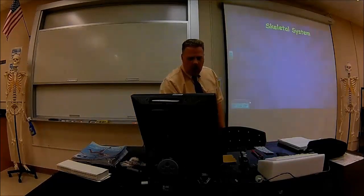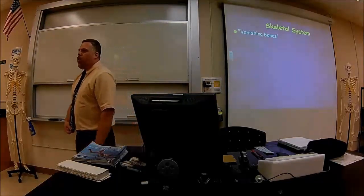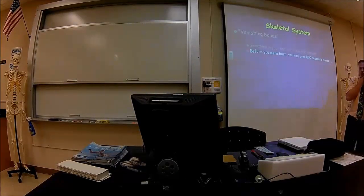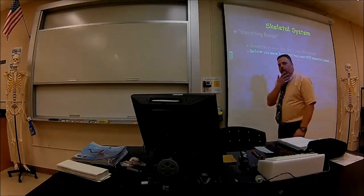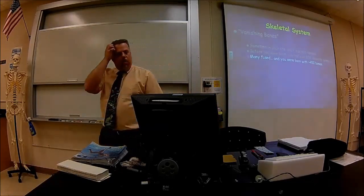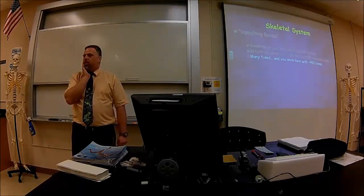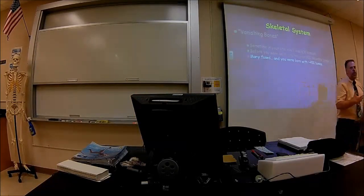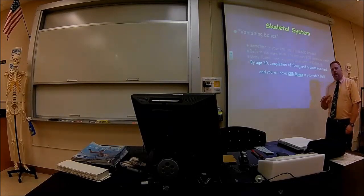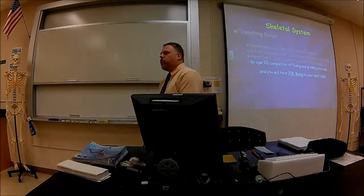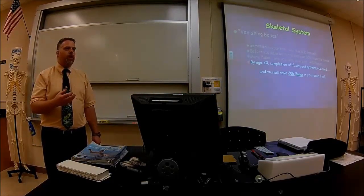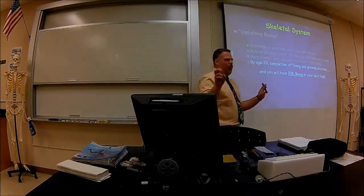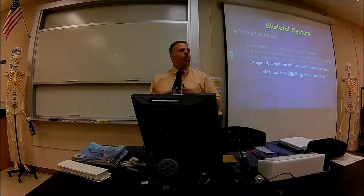The skeletal system — we have vanishing bones. Sometime in your life you're going to lose 600 bones. Before birth you had over 800 separate bones, but many fused. You were born with about 450 bones. More fusion occurs throughout childhood and adolescence, and when you reach about age 20 you have a full set of adult bones — a skeleton of 206 bones. So we call it vanishing bones.